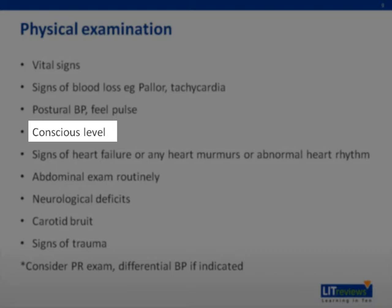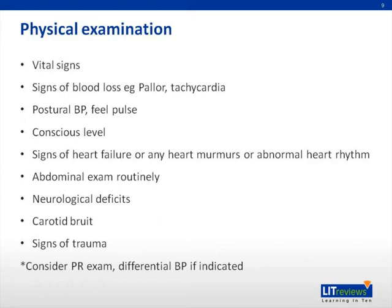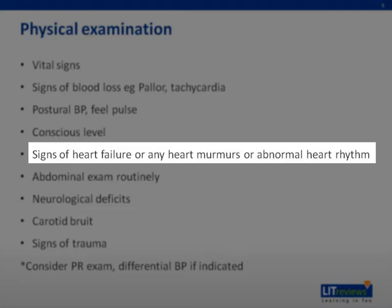Note the conscious level of the patient. Patients with true syncope should have returned to their normal baseline mental state. If they are still persistently disoriented or have an altered mental state, consider a neurological, toxic, or metabolic cause, which is not true syncope. Do a complete cardiovascular examination looking specifically for signs of heart failure or heart murmurs, especially new heart murmurs. Signs of heart failure would include lung crepitations, raised jugular venous pressure, distended neck veins, pitting edema of the peripheries, and possibly hepatomegaly.